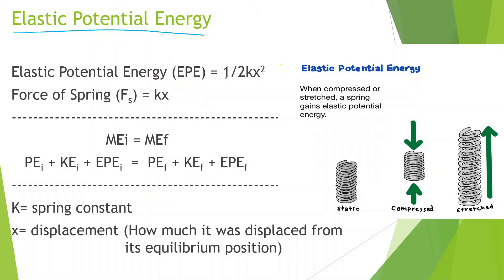Elastic potential energy is equal to one half kx squared, and we should also know the force of a spring is equal to kx. K stands for the spring constant — how stiff or loose a spring is. If there's a very high spring constant, that means it's very stiff. And x represents displacement, how much it was displaced from its equilibrium position. So this would be its equilibrium position, and when it's compressed, how much it is compressed is x. Or how much it's stretched is also going to be x.